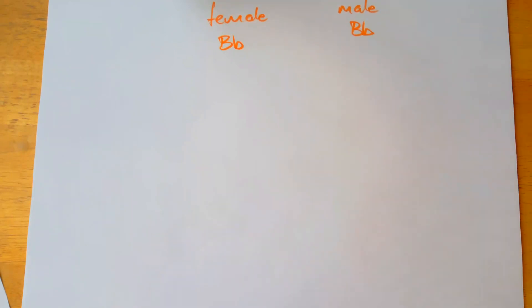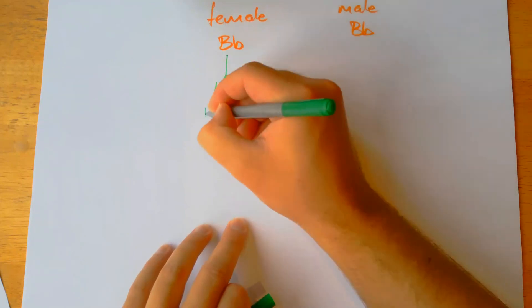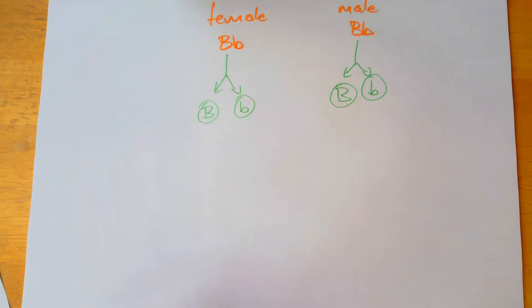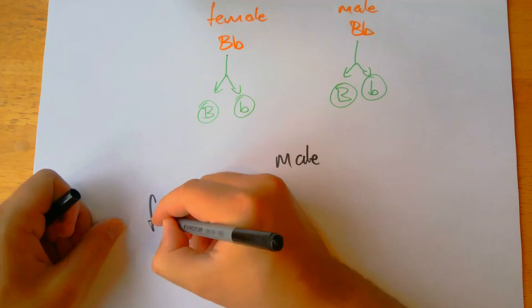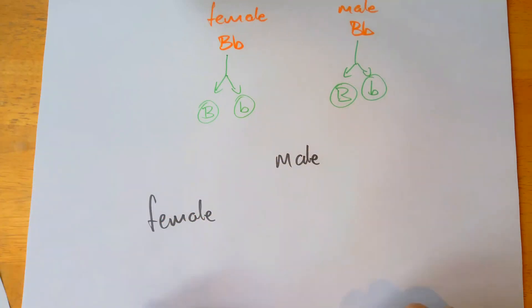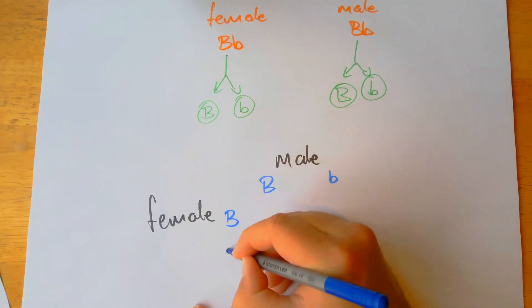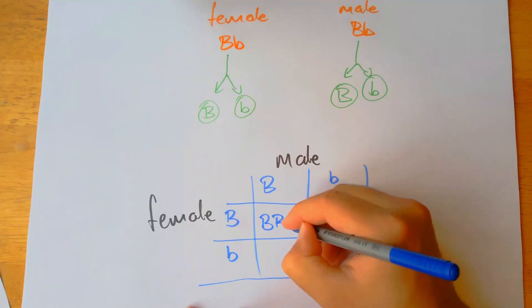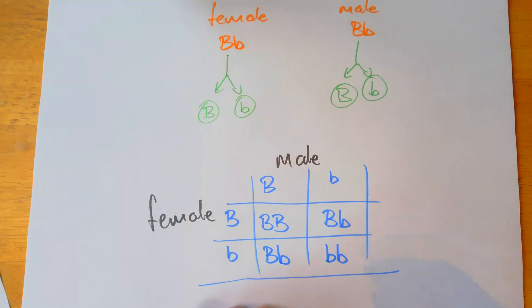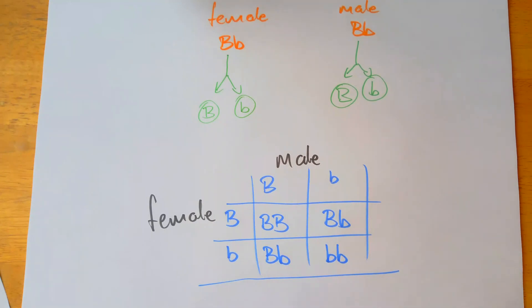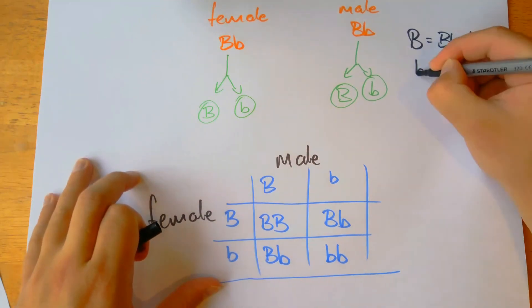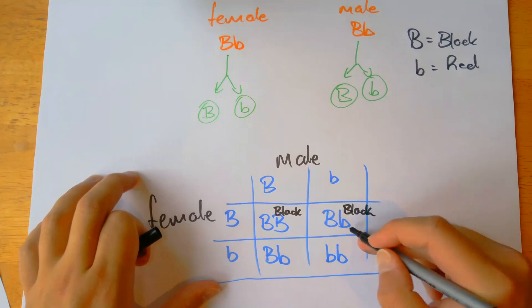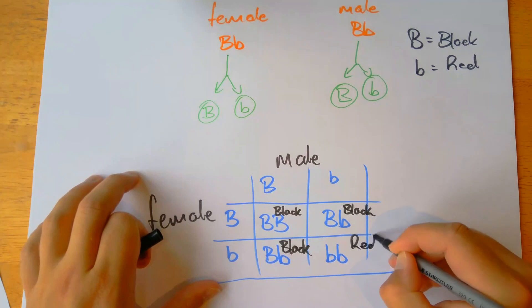What are the possible gametes from these heterozygous parents? One dominant and one recessive from each. We put the male alleles — big B, little b — on top and the female alleles — big B, little b — on the side, and draw our Punnett square. We get one homozygous dominant, two heterozygous, and one homozygous recessive. How many offspring will have the black coat? Remember, big B is black and little b is red. One black, another black, another black because of the dominant alleles — and one red because of the homozygous recessive.